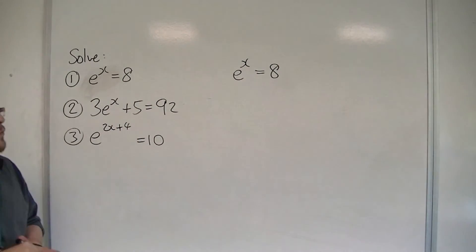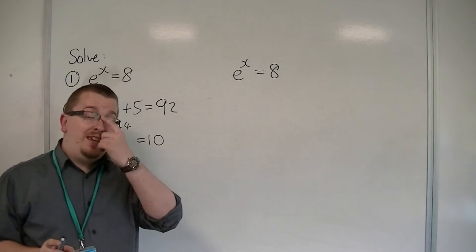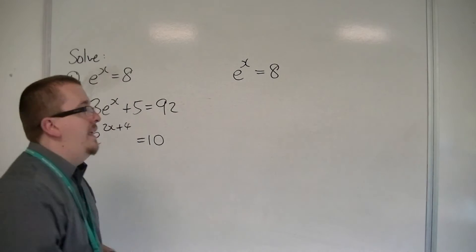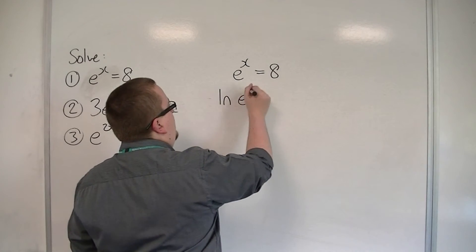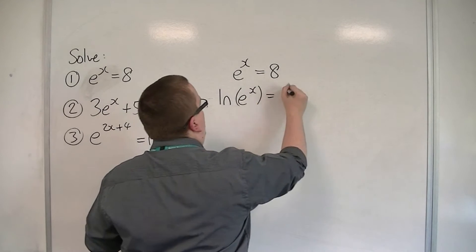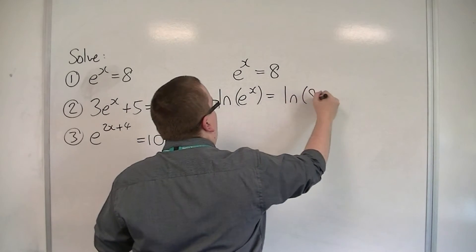Now, if we're going to log both sides, we're using the natural log, so ln. So we can take ln of e to the x is going to be equal to ln of 8.